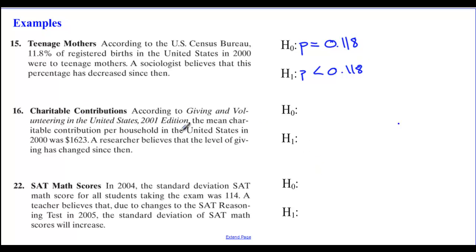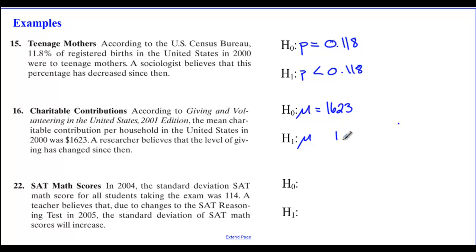For number 16: according to Giving and Volunteering in the United States 2001 edition, the mean charitable contribution per household in the year 2000 was $1,623. A researcher believes the level of giving has changed since then. So H-naught: mu equals $1,623. For H-one, since the researcher just says it changed — not specifying above or below — we use not equal: mu ≠ $1,623.